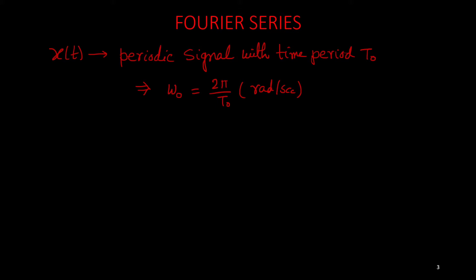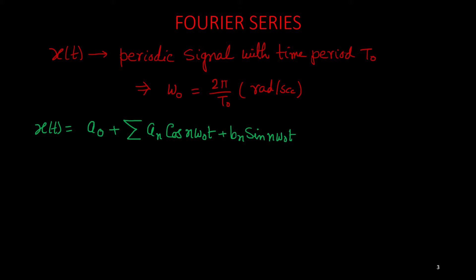From the Fourier series concept, we know that this periodic signal can be expressed as a summation of sinusoids. So we can write x(t) as a0 plus summation of an·cos(nω0t) plus bn·sin(nω0t), where n is all positive integers starting from 1 to infinity. This a0 is basically the average value of this periodic signal.